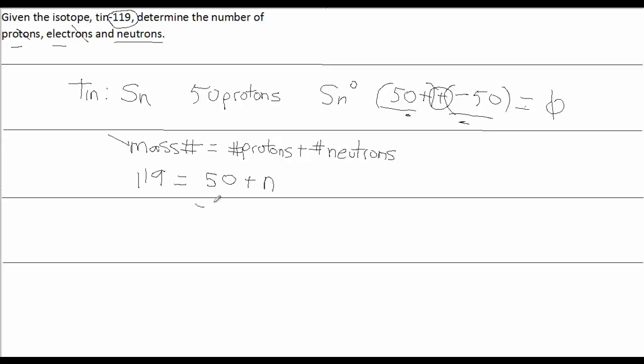If we solve for N, that means we have to subtract 50 from both sides. A little algebra problem here. One equation, one unknown. If we do that, we have N is equal to 69. So, the answer to the neutron question is 69 neutrons.